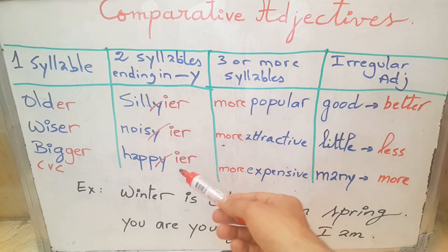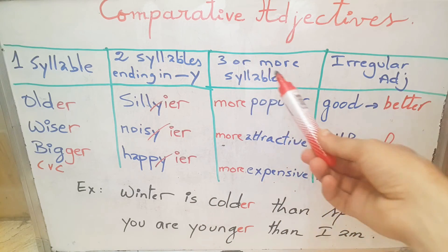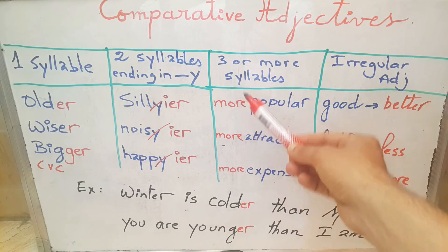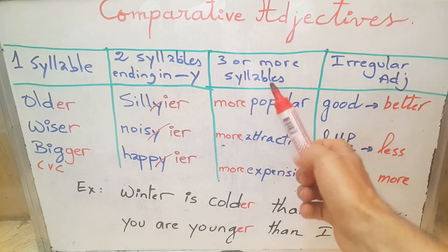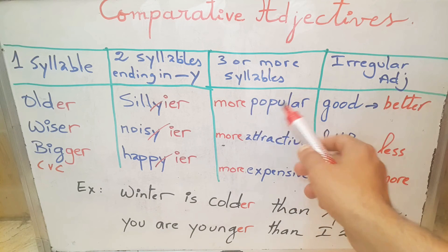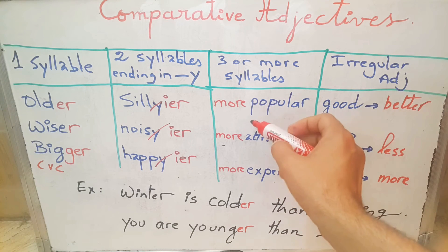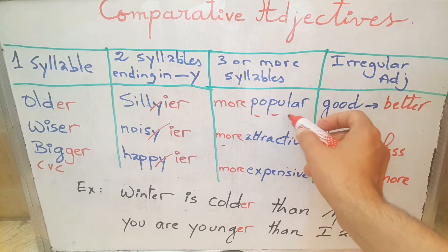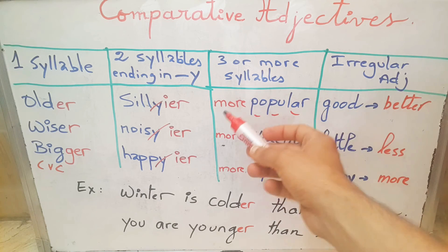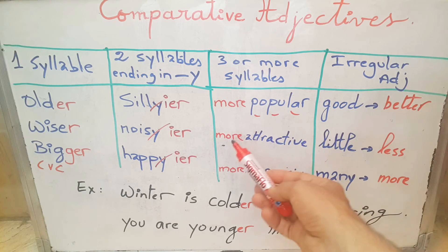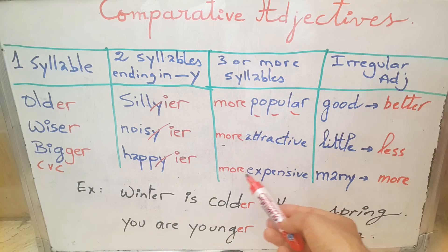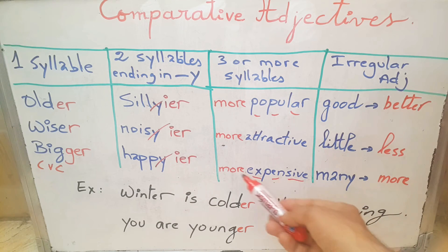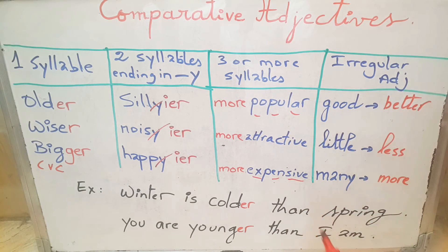Three or more syllables — here we add more before the adjective. For example, popular is three syllables: more popular. Attractive becomes more attractive. Expensive becomes more expensive.